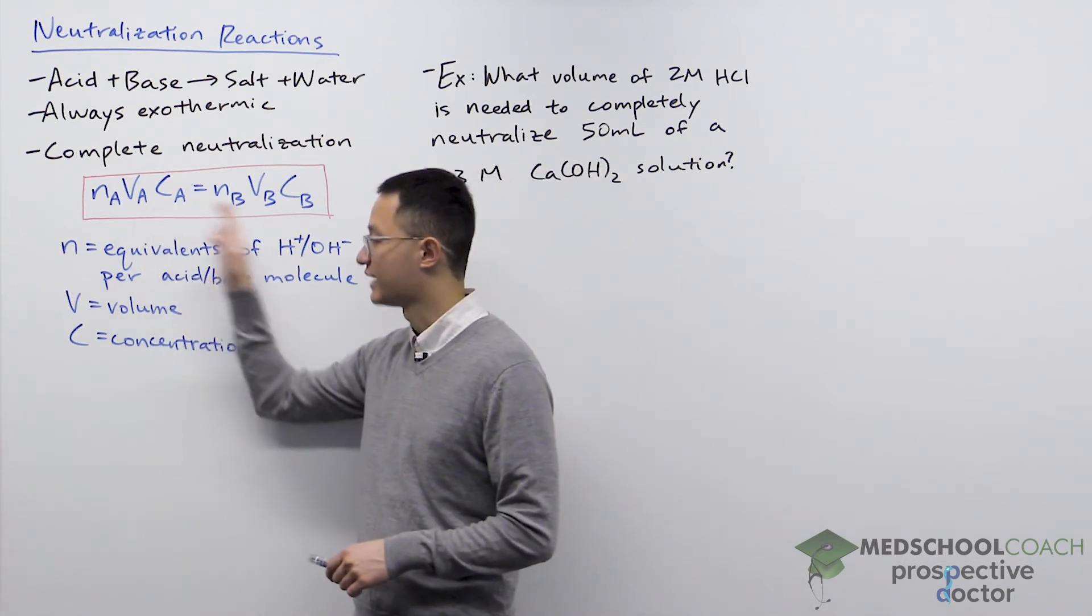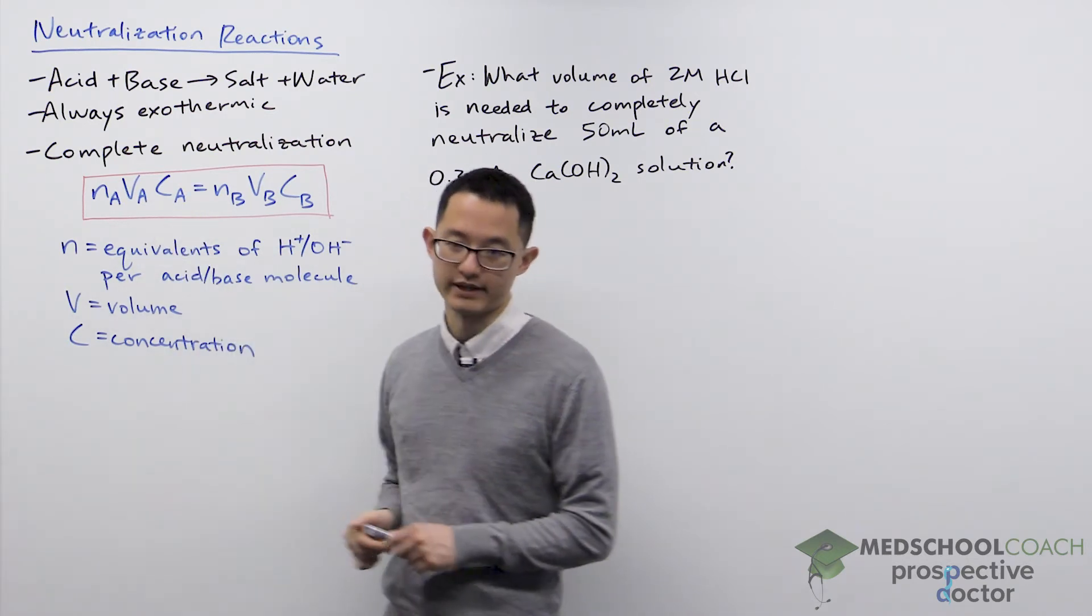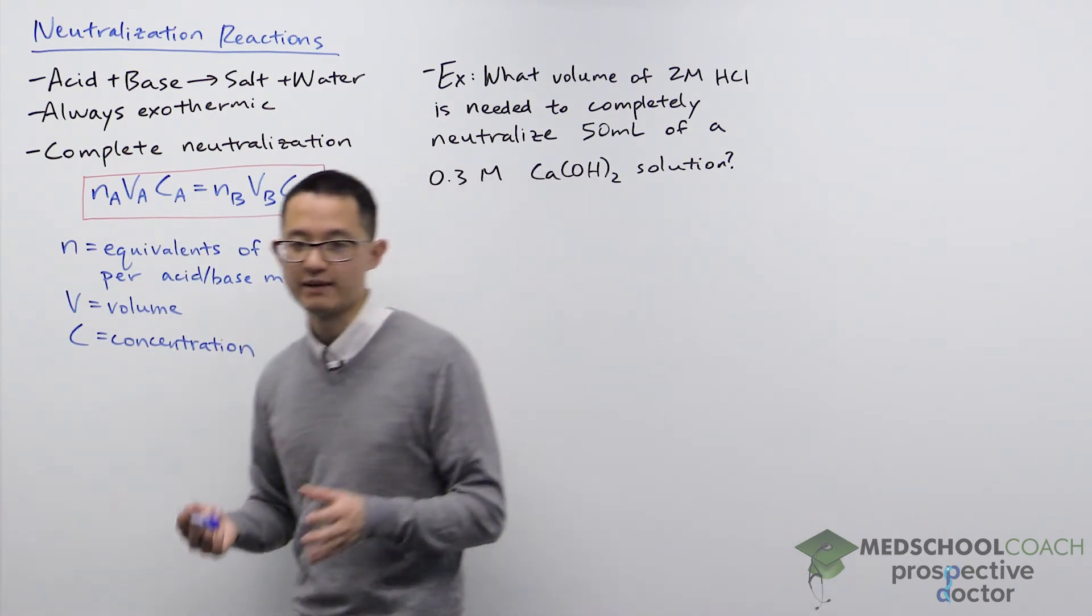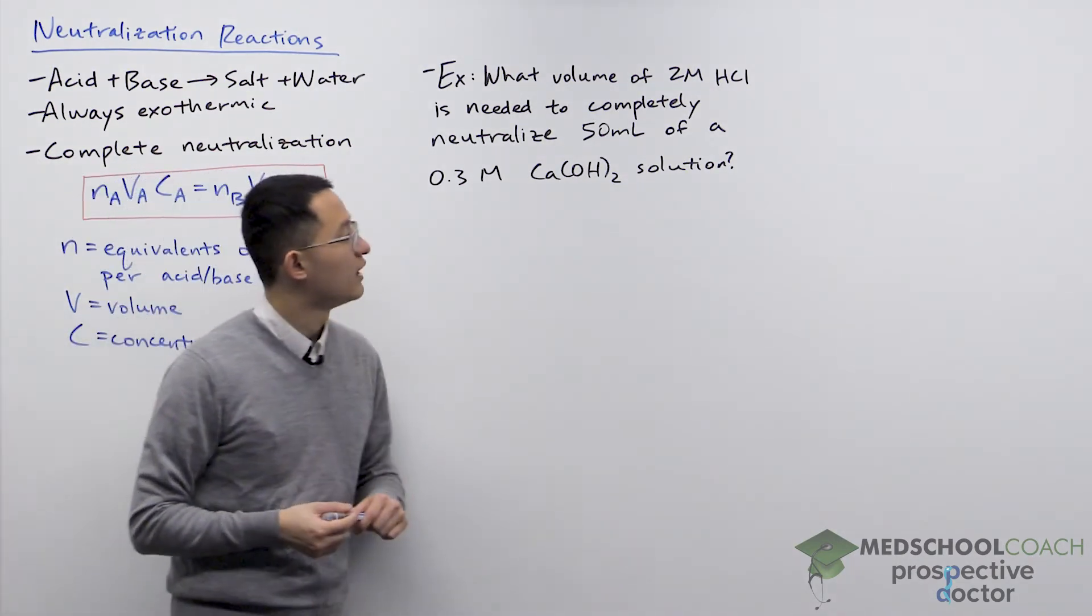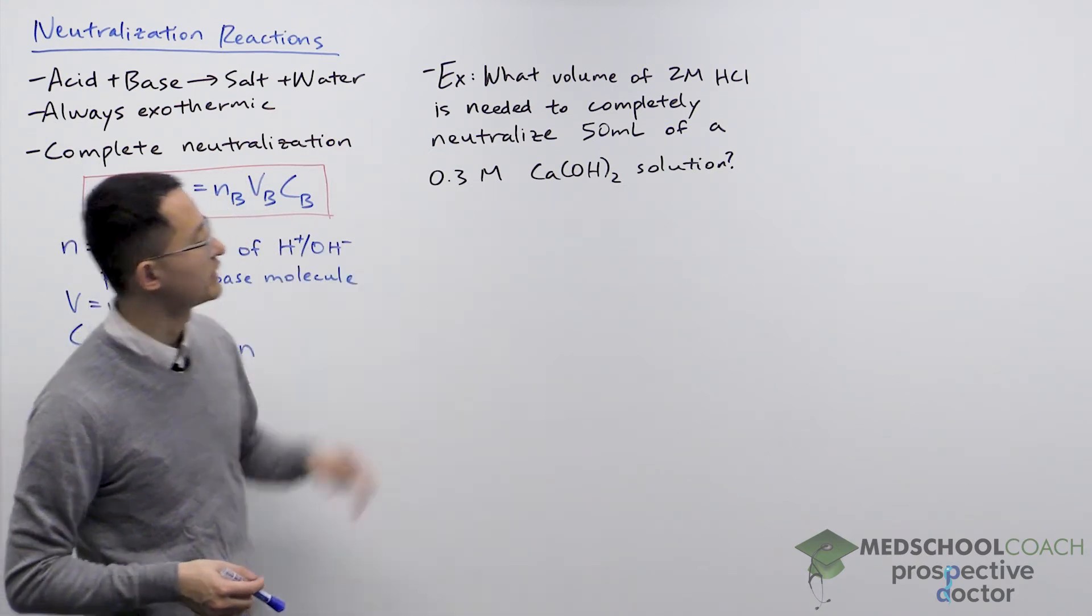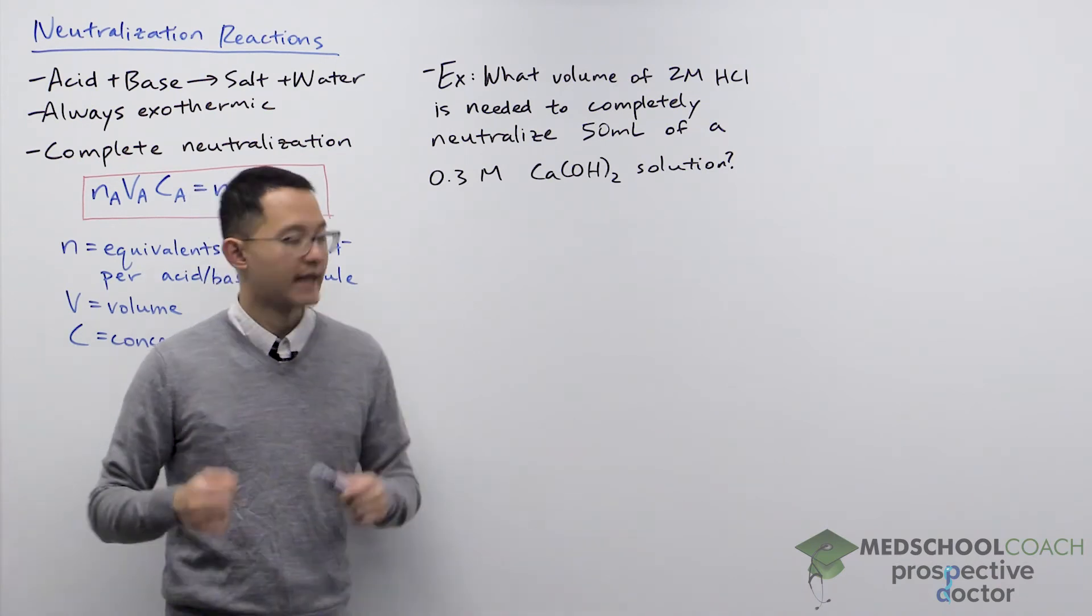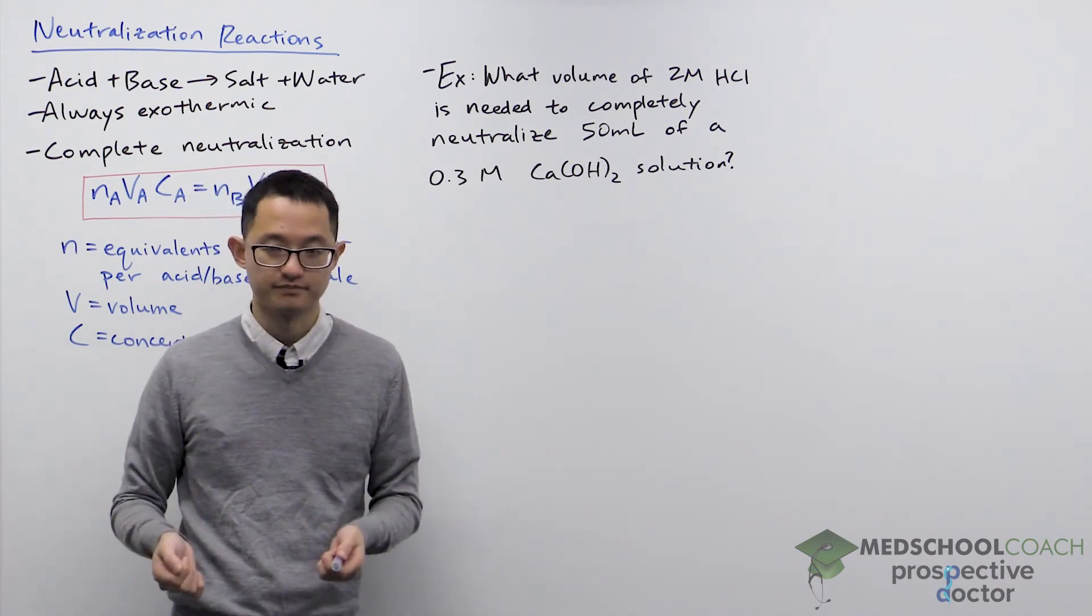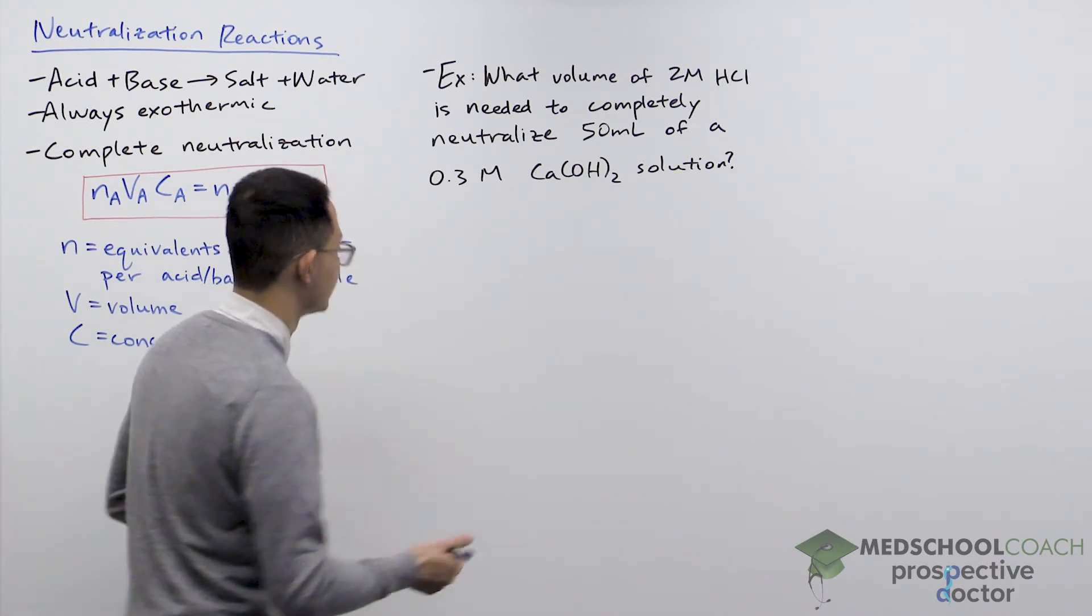V is the volume of the acid and base, and C is the concentration of the acid or the base. Let's take a look at an example to see how this works. Here, the question is: what volume of 2 molar hydrochloric acid is needed to completely neutralize 50 milliliters of a 0.3 molar calcium hydroxide solution? To do this calculation, we can start first by writing out the equation.